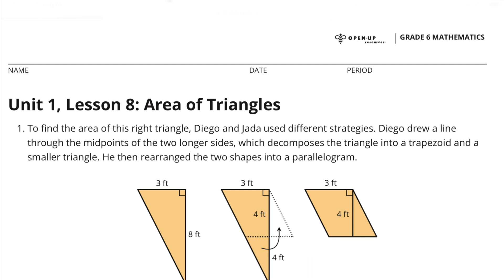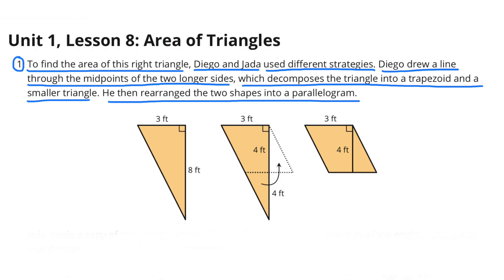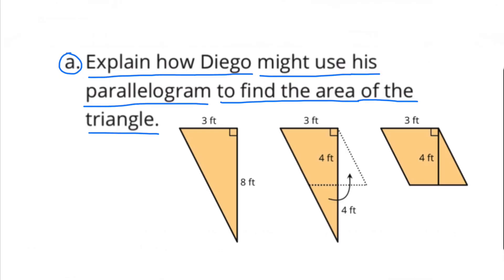Unit 1, Lesson 8, Area of Triangles, Number 1. To find the area of this right triangle, Diego and Jada used different strategies. Diego drew a line through the midpoints of the two longer sides, which decomposes the triangle into a trapezoid and a smaller triangle. He then rearranged the two shapes into a parallelogram. Explain how Diego might use his parallelogram to find the area of the triangle.